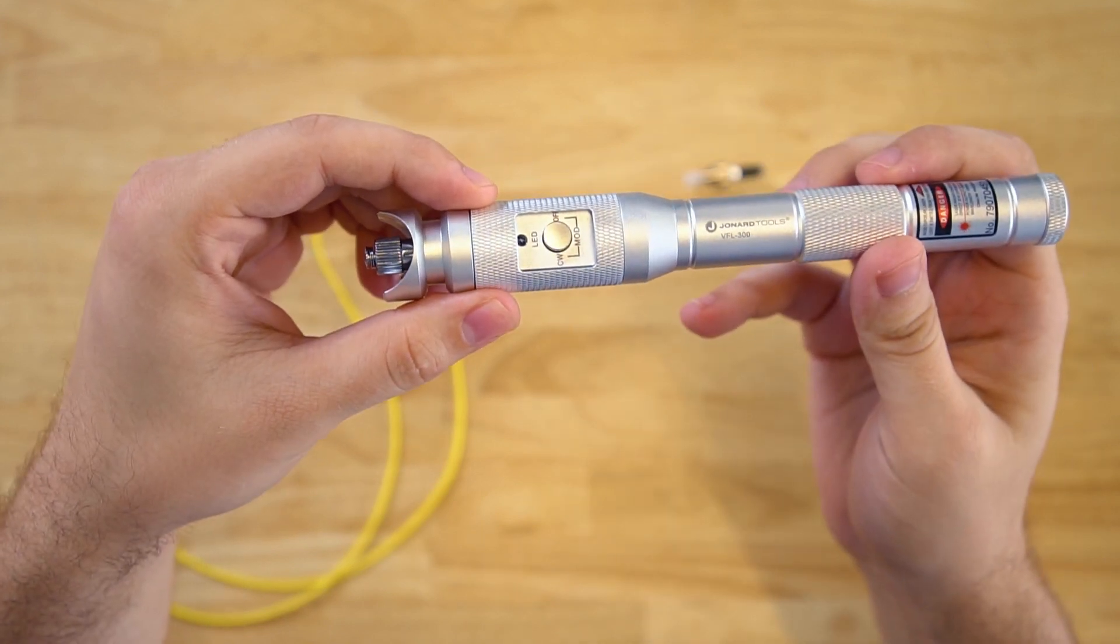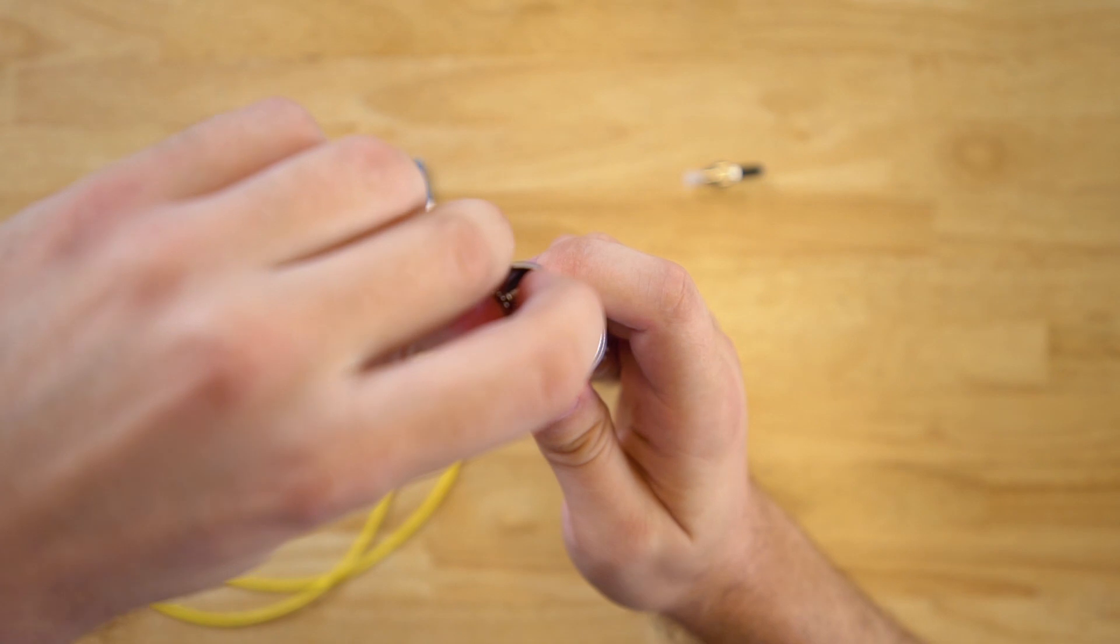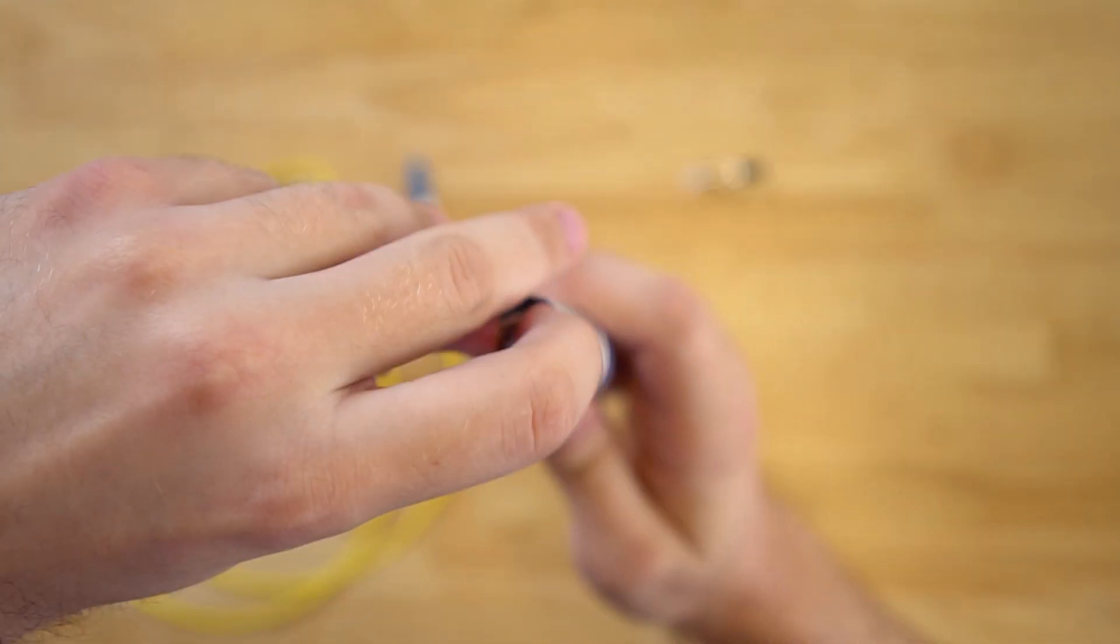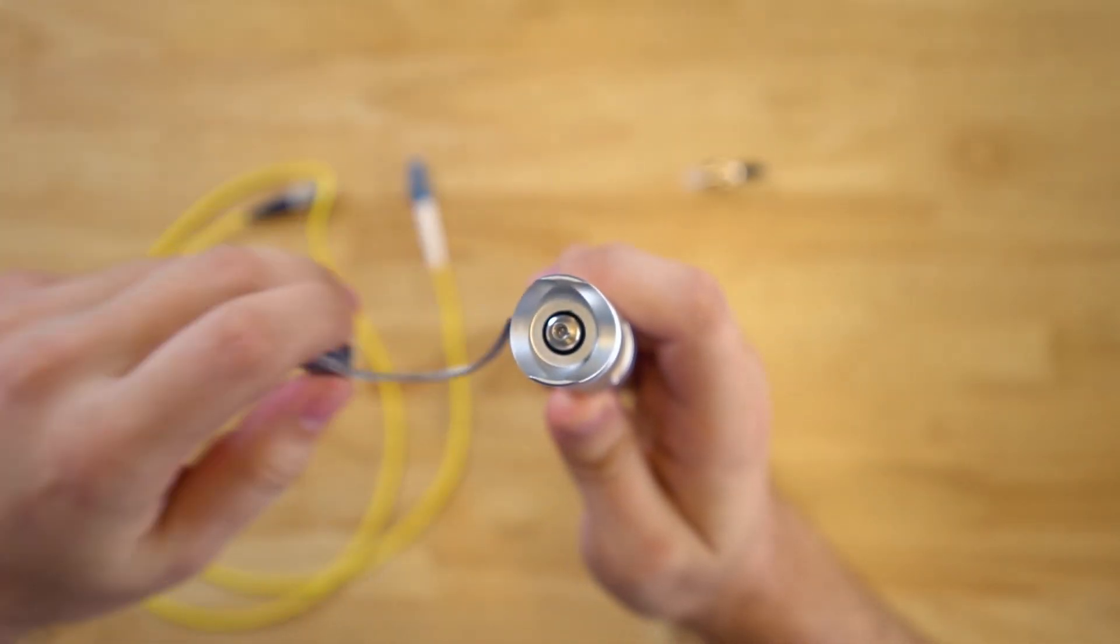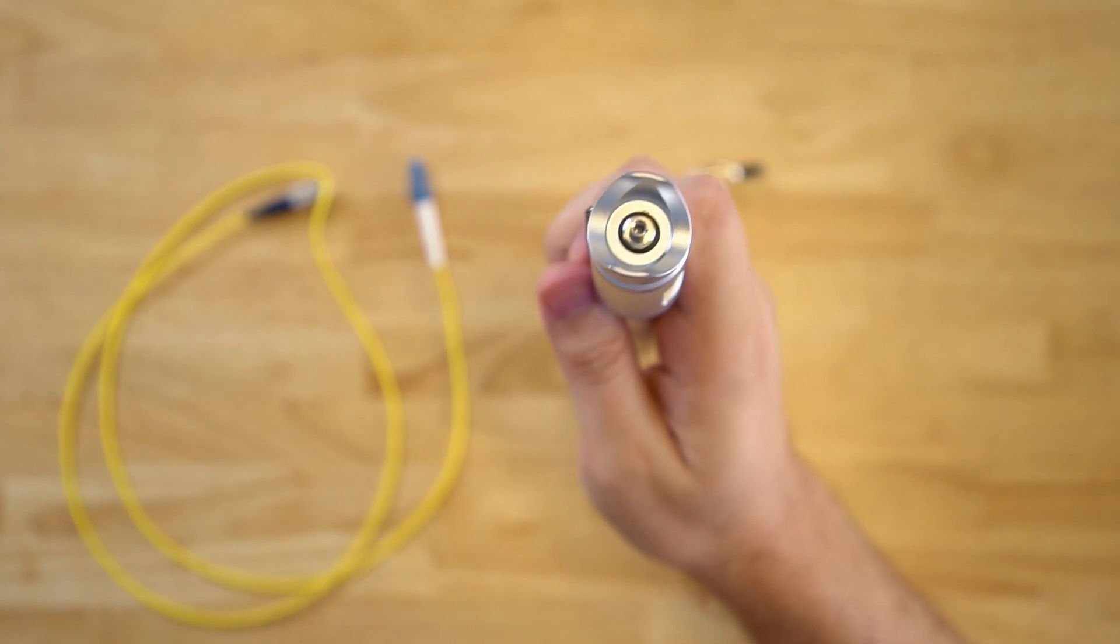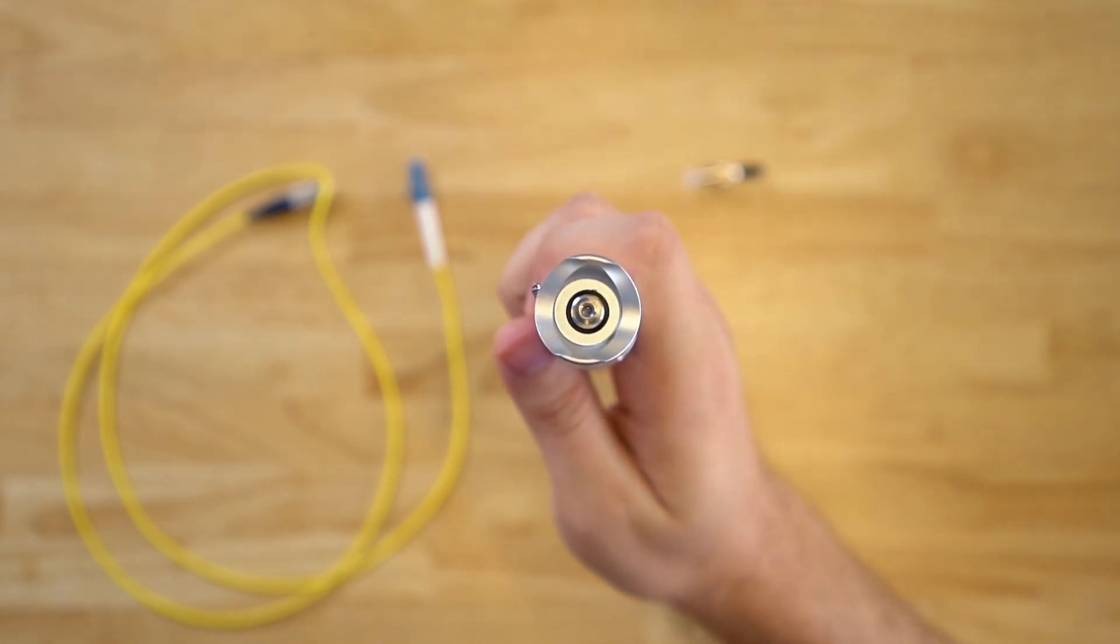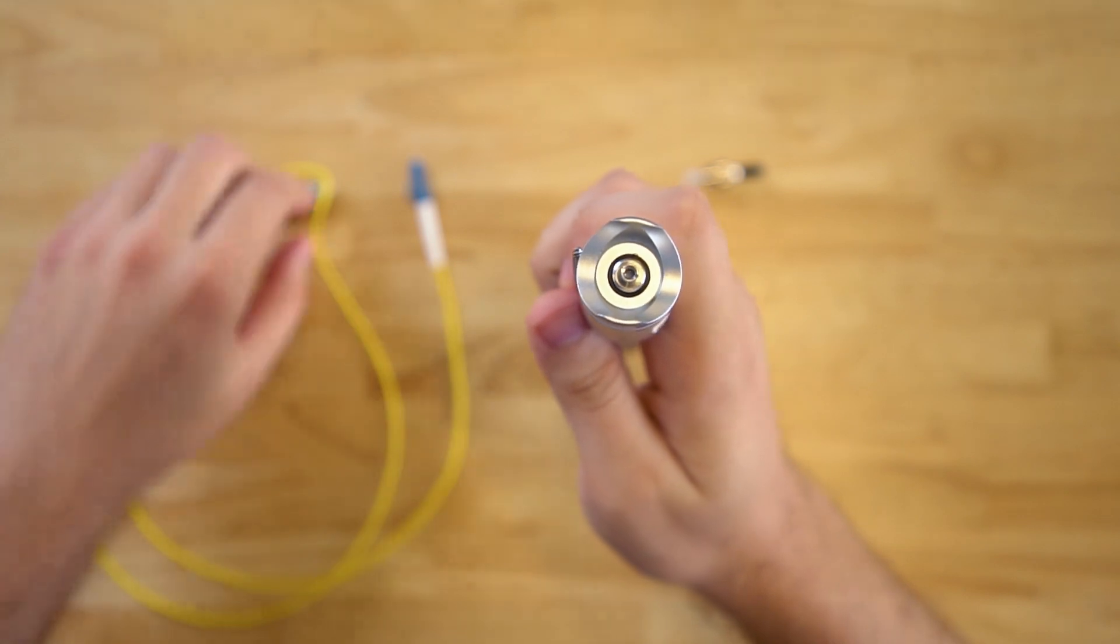When you want to use this on a fiber optic cable, first unscrew the dust cover, like so. And if you're using an FC, SC, or ST connector, you can connect it directly to the VFL.